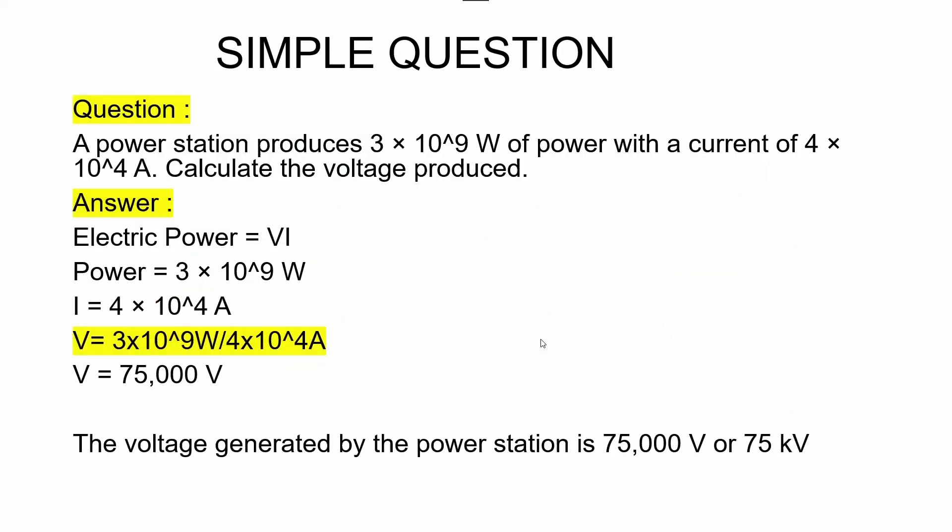Now we can understand this concept with a simple example. You can see the slide. A power station produces 3 × 10⁹ watts of power with a current of 4 × 10⁴ amperes. We have to calculate the voltage produced. Using the formula Power = Voltage × Current, we know the power is 3 × 10⁹ watts and the current is 4 × 10⁴ amperes. The final answer is 75,000 volts, or 75 kV. This is a simple calculation showing how voltage is calculated based on the power generated at the power station.